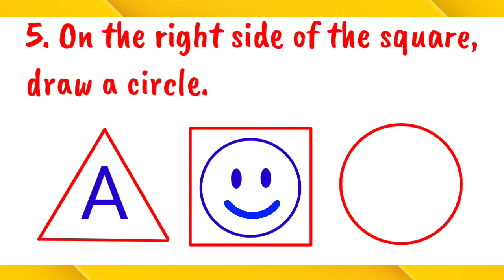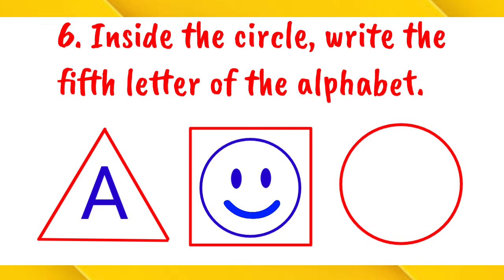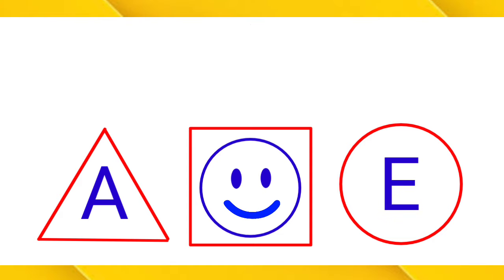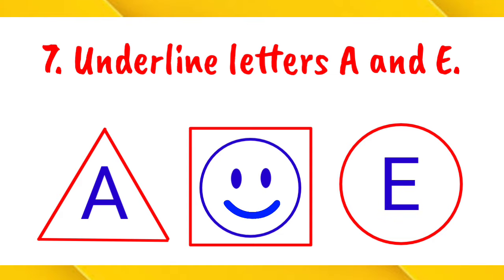Awesome! Next number. Inside the circle, write the fifth letter of the alphabet. What's the fifth letter of the alphabet? It's letter E. Okay, number seven, underline letters A and E. So, let's underline A and E.